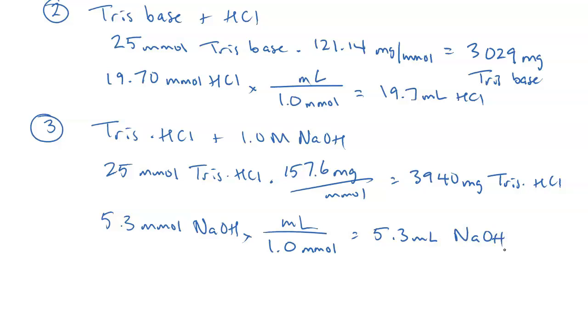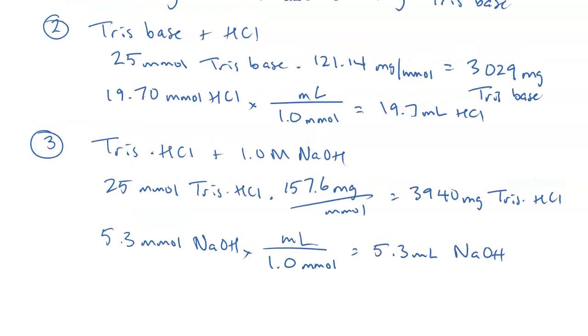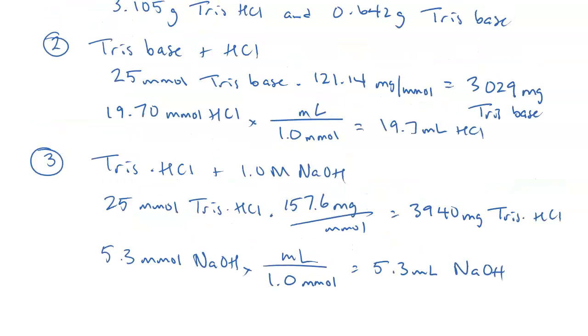In both of these cases, 2 and 3, you would probably dissolve your either Tris base or your Tris conjugate acid form in your 450 milliliters of deionized water. You would add the HCl or sodium hydroxide. You would dilute it up to the mark. And you would have the buffer.